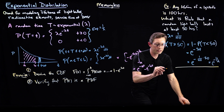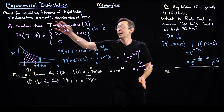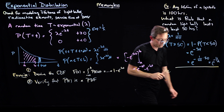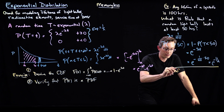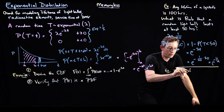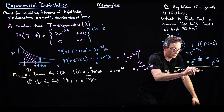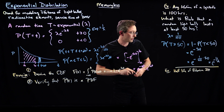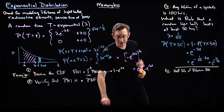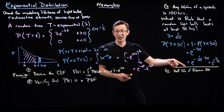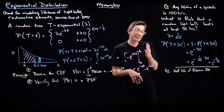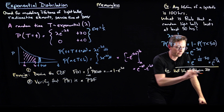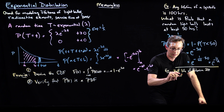Let's do another example: radioactive decay, because these are exactly exponentially distributed. Let's talk about the half-life of polonium-210. Those of you who have watched my videos know I have a fascination with polonium-210, because spies often use this to poison people — it has a really short half-life of 138 days.